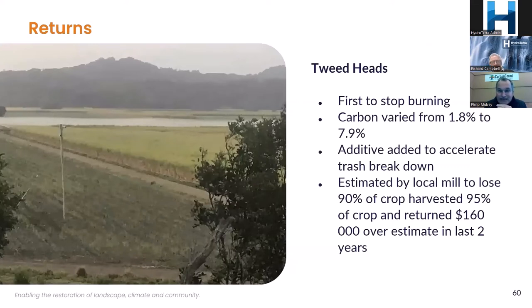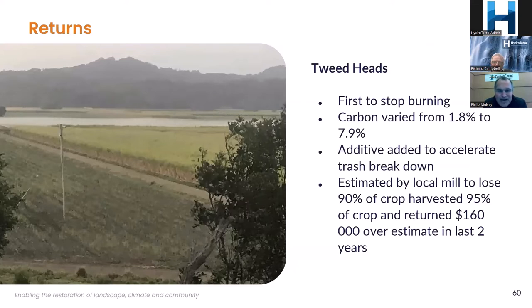Here's an example from Tweed Heads. During the late winter when sugar cane was harvested, a particular additive to increase the degradation of the organic matter of the cane trash resulted in a huge amount of microbial activity, keeping the soil and trash slightly warmer, resulting in a mist overlying the land.